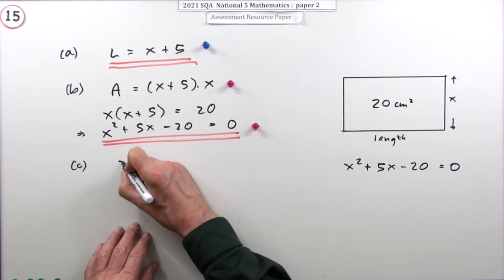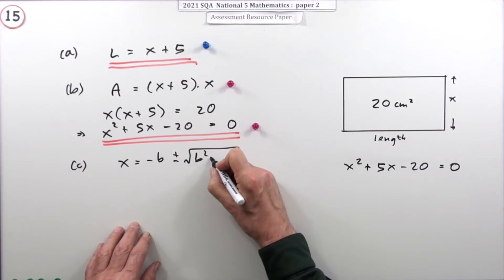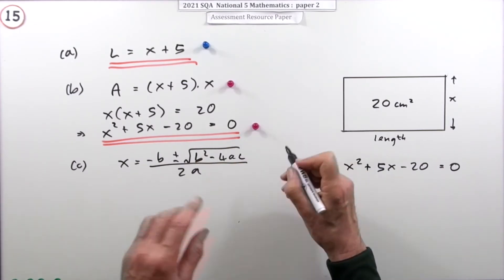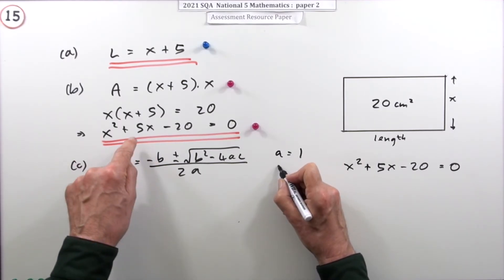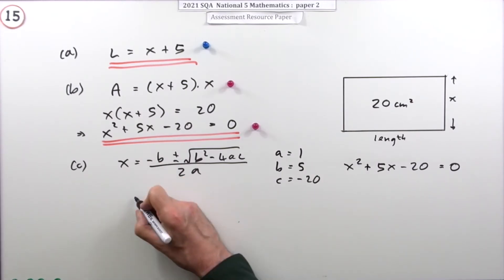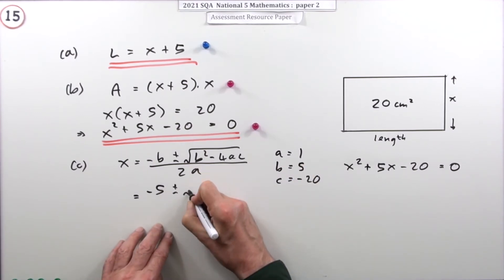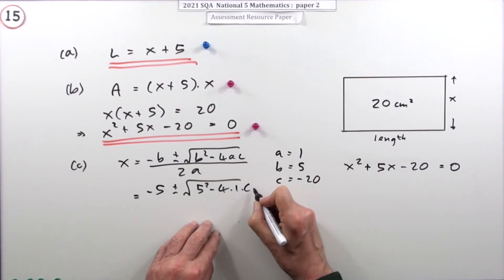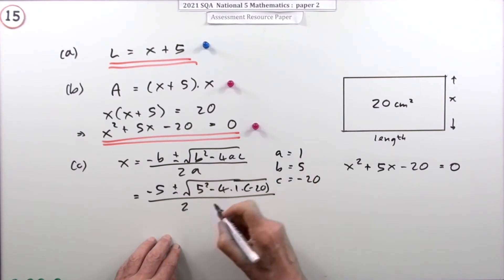The quadratic formula is x equals negative b plus or minus the square root of b squared minus 4ac, all over 2a. Note that a is the coefficient of x squared, b is the coefficient of x, and c is the constant. Substituting in: negative 5 plus or minus the square root of 5 squared minus 4 times 1 times negative 20, all over 2 times 1.